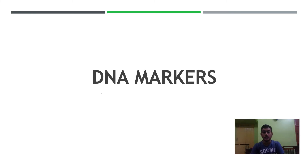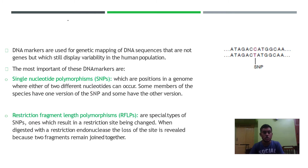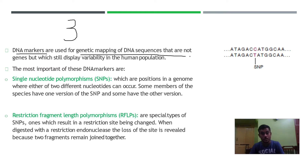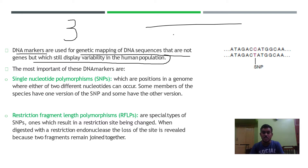In this video I'll talk about DNA markers. DNA markers are used for genetic mapping of DNA sequences that are not genes but still display variability in the human population. There are different types of DNA sequences available to us that are mapped using genetic mapping.